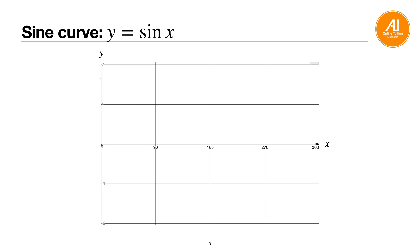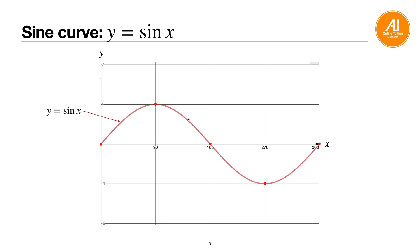The sine curve looks like a mountain and a valley. Key points are: 0, then 1 at 90, back to 0 at 180, negative 1 at 270, and 0 at 360. When drawing, divide your graph into four equal intervals at 90, 180, 270, and 360. The basic sine curve ranges from 1 to negative 1.